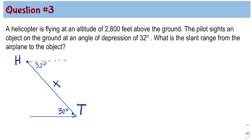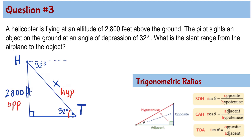Another given is the height of the helicopter, which is 2,800 feet, and it forms a 90 degree angle. To set up an equation solving for X, in reference to the 32 degree angle, 2,800 is the opposite and X is the hypotenuse. The trigonometric ratio that involves opposite and hypotenuse is sine. So sine 32 degrees is equal to opposite 2,800 over hypotenuse X.